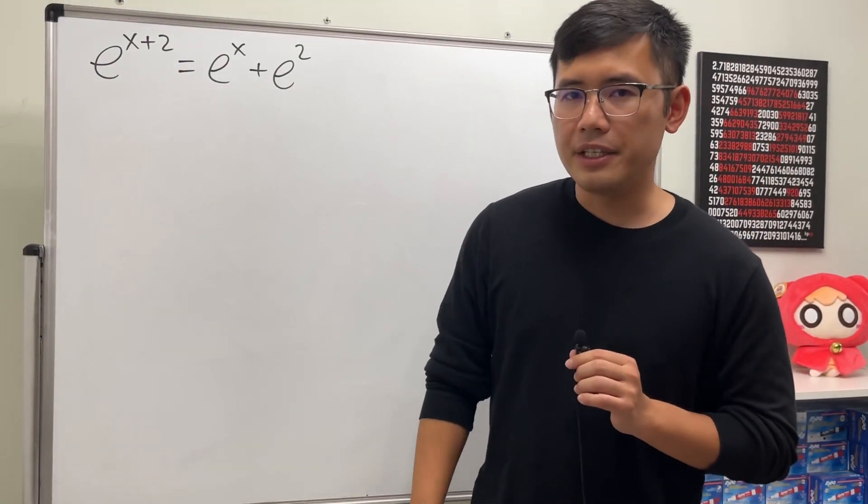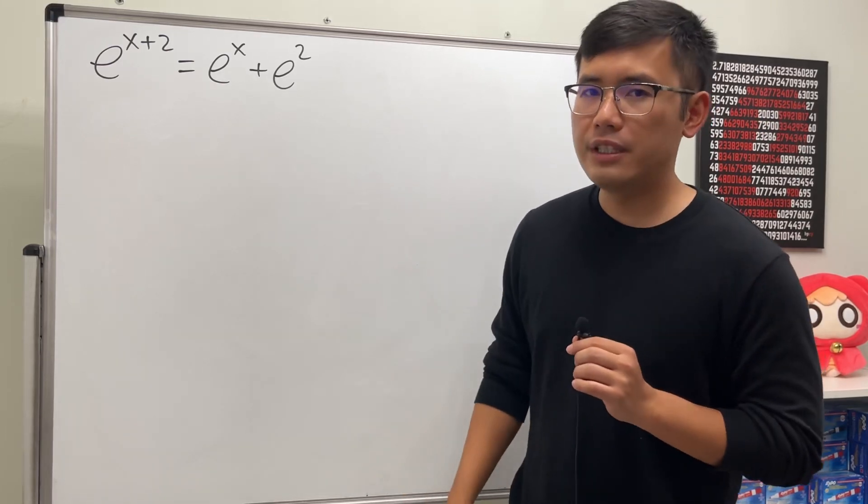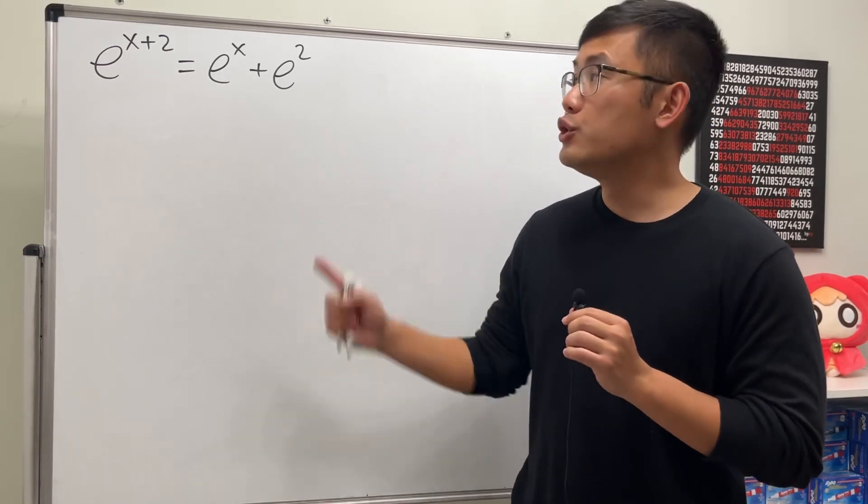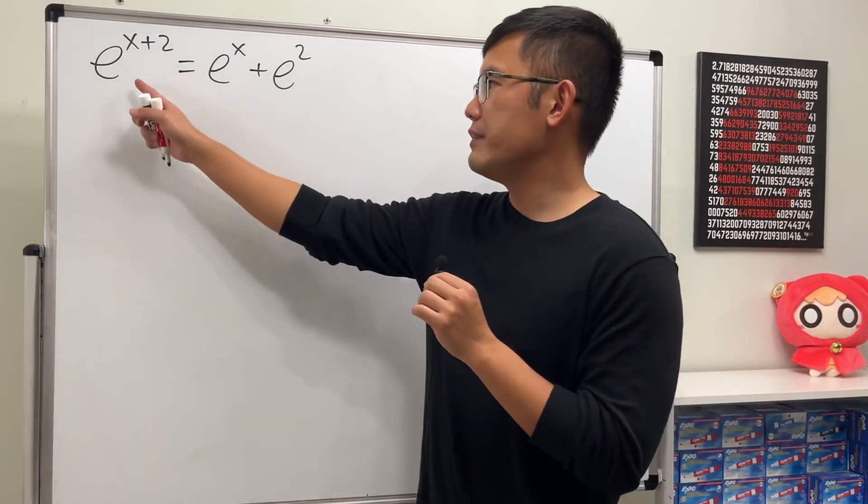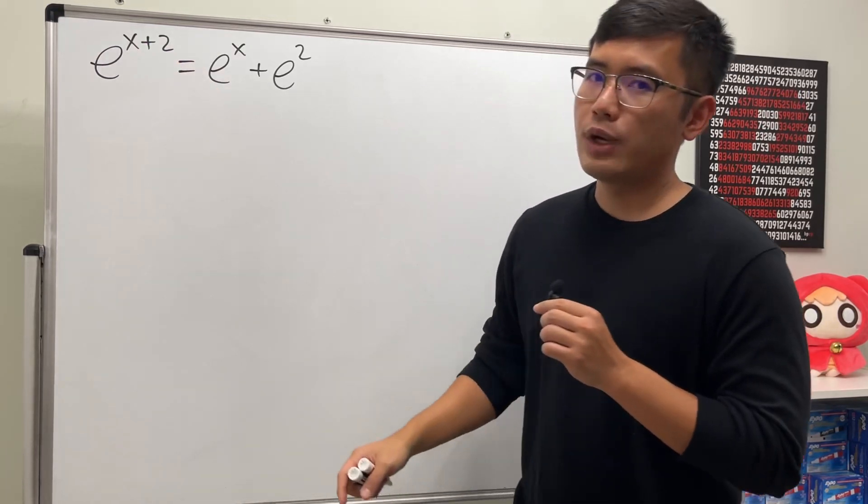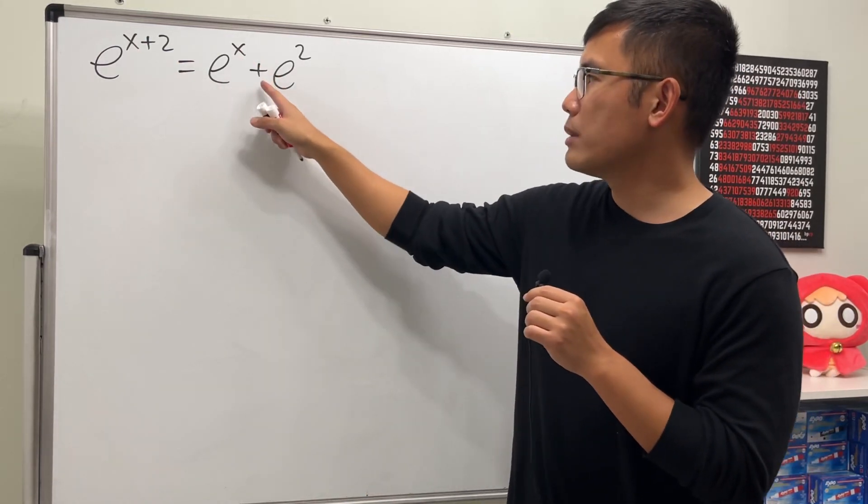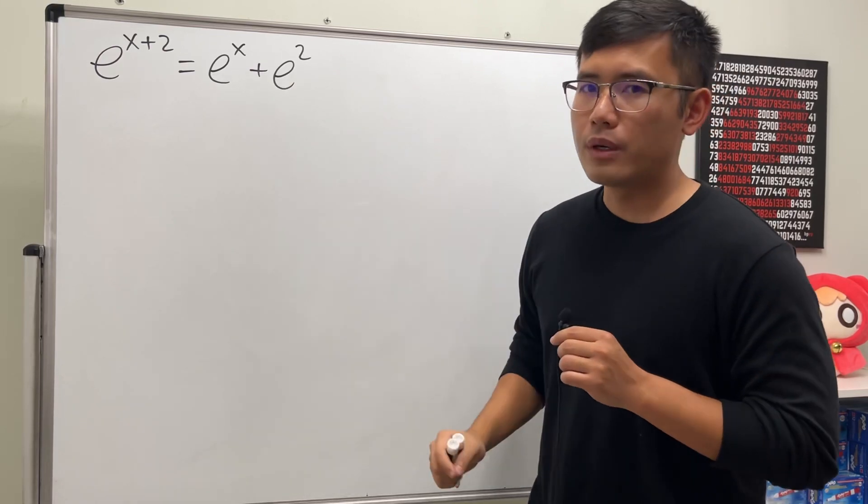Whenever you see a bad math identity, don't laugh because you might actually be dealing with a very nice math equation. Just like this one: on the left-hand side we have e to the power of x plus 2, and on the right-hand side we have e to the x power plus e to the second power.